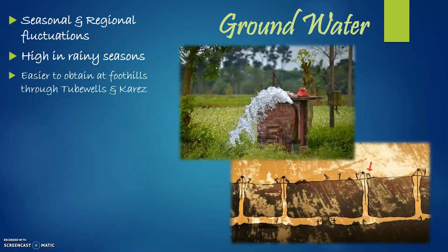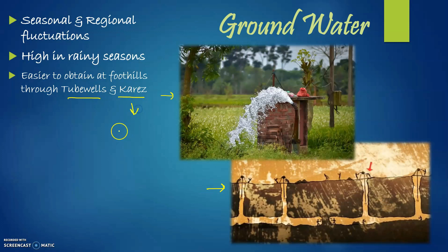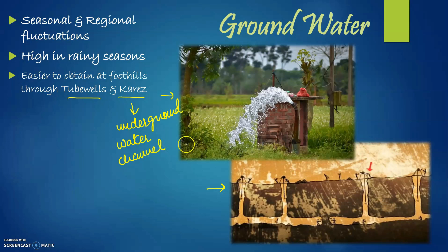The next point is that groundwater is easier to obtain at foothills through tube wells and kareze. As you can see in the picture, a tube well is one method. Kareze is basically an underground water channel from which water is dug up and brought to the surface. As you can see in the picture, people dig vertical shafts to access this water. We will discuss kareze in more detail in a later topic on conventional and modern methods of irrigation.